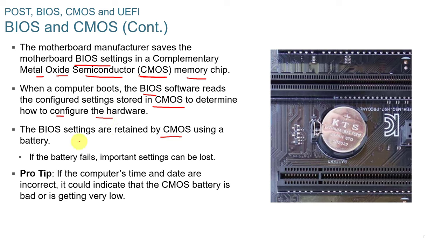BIOS settings are retained using a small battery. If that battery fails, important settings can be lost from your CMOS. If your computer shows the wrong date and time before reaching the operating system — for example, if it's about a year off — that's an indicator that your battery is dead and not retaining your settings.